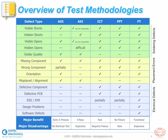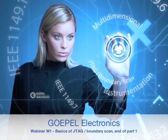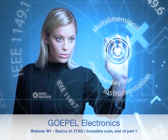One might think functional test is perfect when looking at this table, since it can detect most of the listed defects. However, test development is usually manual and time consuming. Diagnostic capabilities can be rather limited. Test execution time can be lengthy depending on unit under test complexity, and functional test equipment can be expensive. In summary, none of these test methodologies is perfect, and none of them should be used solely by itself before shipping the end product to a customer.